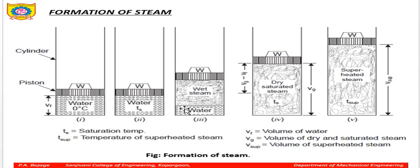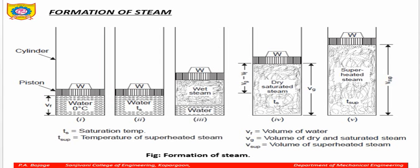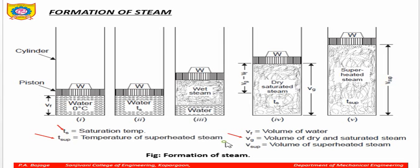Now, in the formation of steam — how is steam actually formed? There are stages of formation of steam. This is a very basic and important concept. Here in the first case, you can see a piston having a weight W acting in the downward direction, and a unit mass of water having specific volume. VF is the volume of water, TS is the saturation temperature, VG is the volume of dry and saturated steam, and Vsup is the volume of superheated steam.